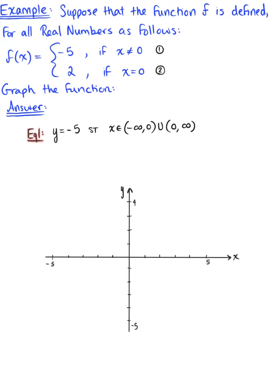Now we have equation 2, which tells us that y is equal to 2, such that x equals 0. This second equation is an ordered pair. In other words, this is a singleton point, an ordered pair (x, y), where when x is 0, y is 2.